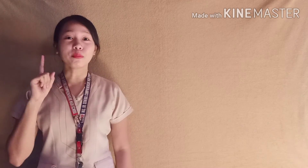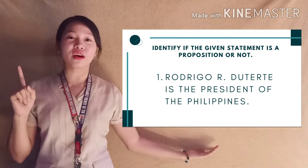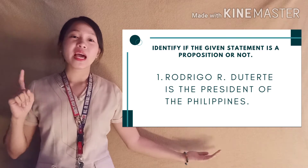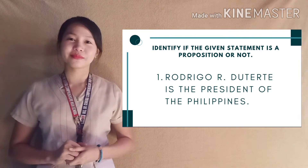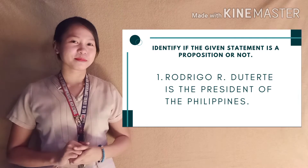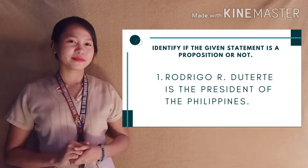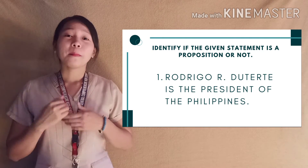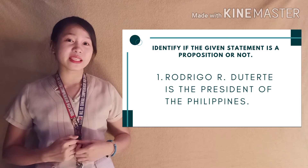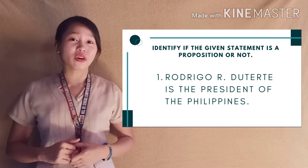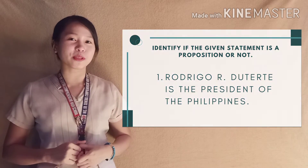Now let's identify if a given statement is a proposition. Number 1: Rodrigo R. Duterte is the president of the Philippines. Is this statement a proposition? By direct check, this is a declarative sentence and it is true. Therefore, it is a proposition.